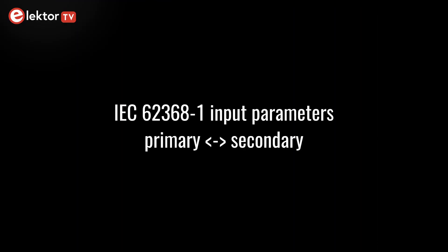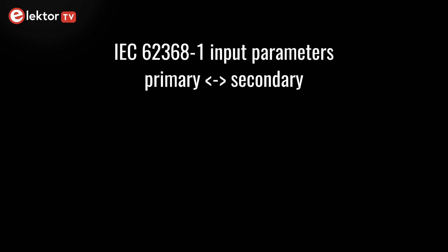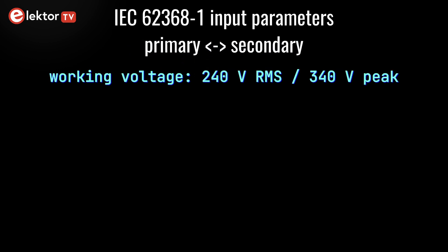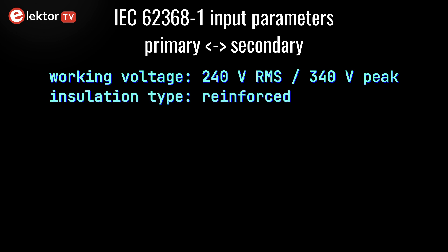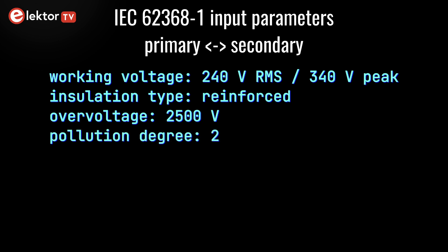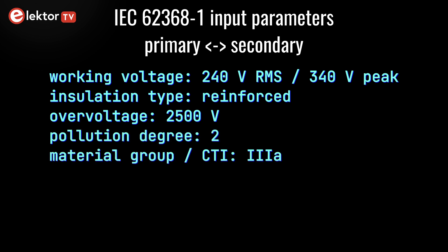In the previous video we came up with the following data: the working voltage is 240 volts RMS and 340 volts peak. Insulation type is reinforced. Overvoltage is 2.5 kilovolts. Pollution degree 2. Material group or CTI 3A. And altitude correction 1.